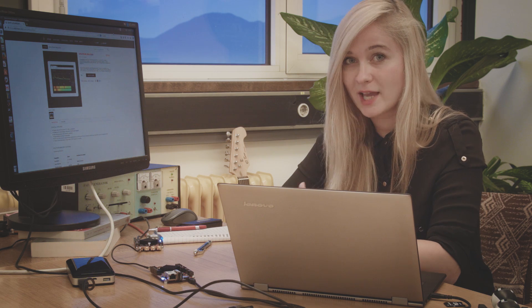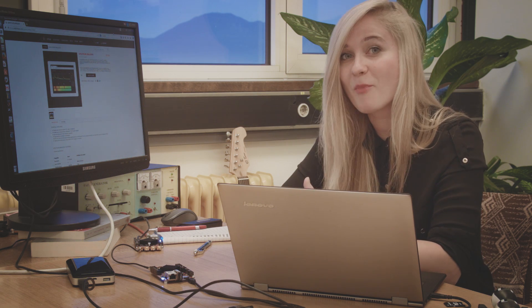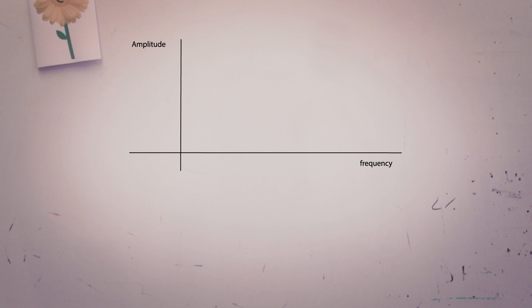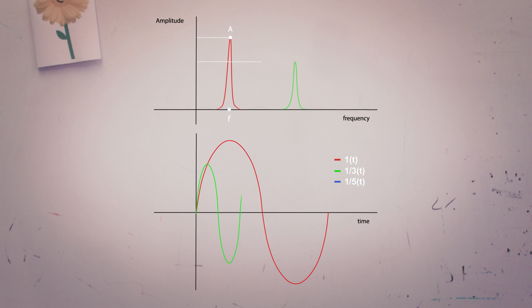And we also know that each continuous signal can be represented as a sum of the simple ones. So let's take our first spike with amplitude one and frequency f. Our spikes are in time domain represented with sine signals as is shown here.